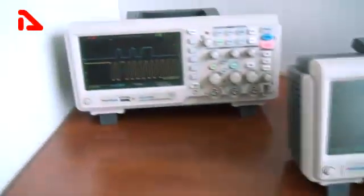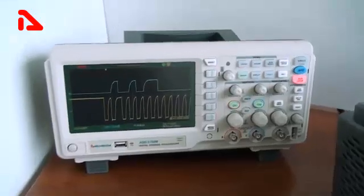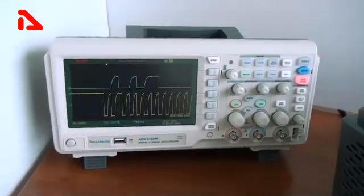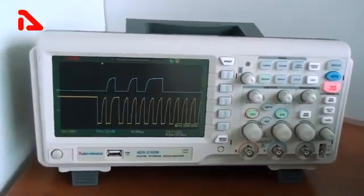HDS series of oscilloscopes feature 25-300 MHz bandwidth, 2-4 channels with up to 2 GSI sampling rate and a memory depth of up to 2 million points.